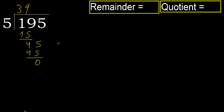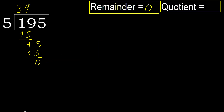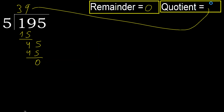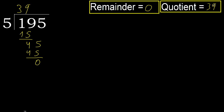There is no remaining number, therefore finish: 195 divided by 5 is 39.